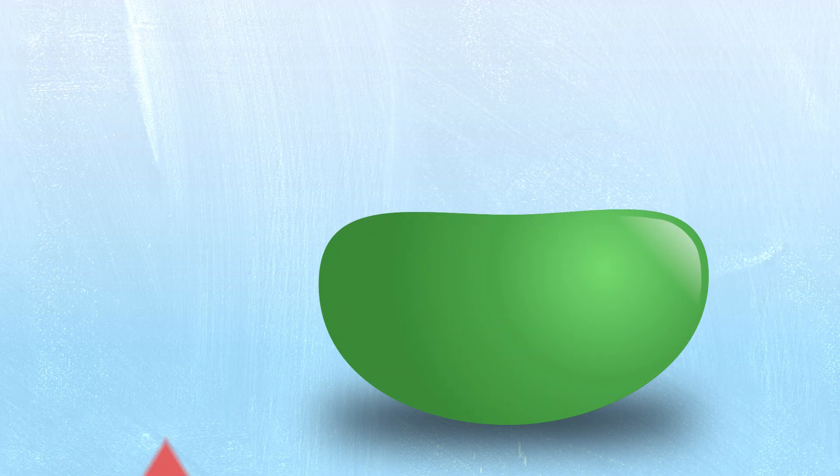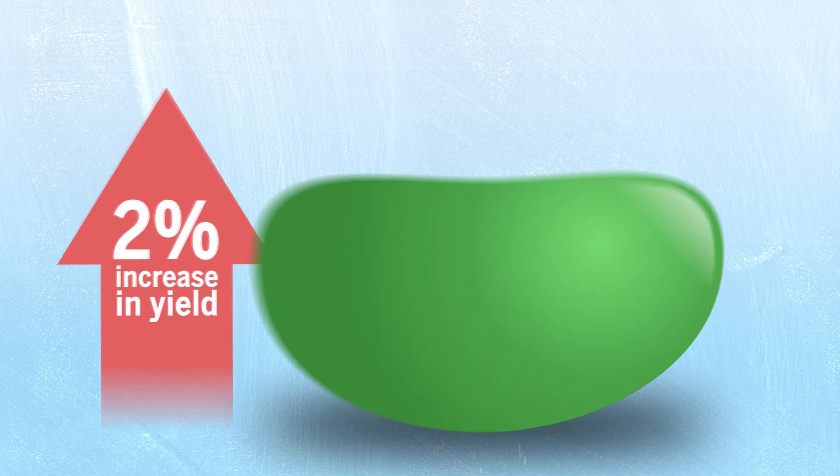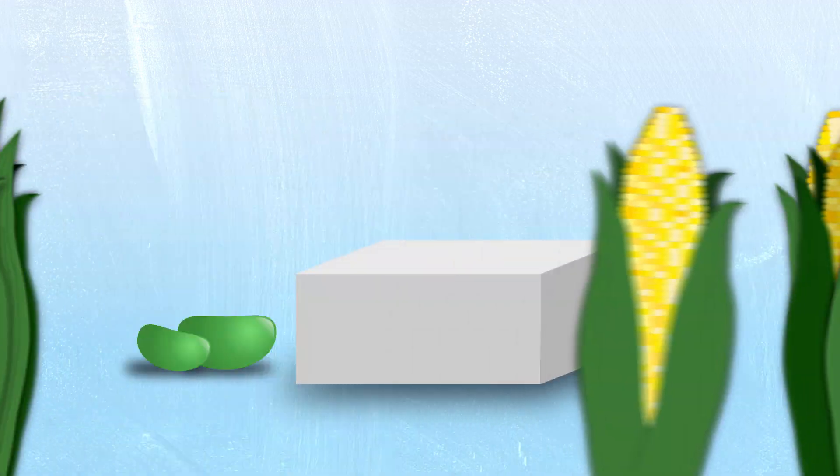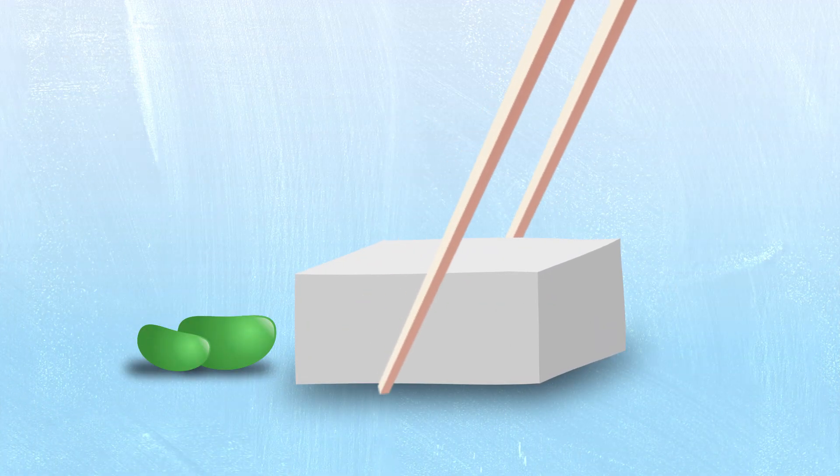For soybean breeders, a 2% increase in yield is huge. So what would a 15% increase in yield give us? Use less land for agriculture? Feed more people? Maybe both?